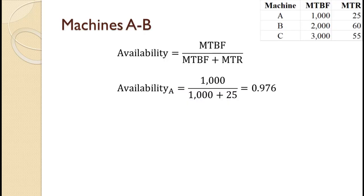For Machine A, the MTBF of 1,000 divided by the quantity of MTBF of 1,000 plus MTR of 25 equals 0.976. So Machine A is available 97.6% of the time.